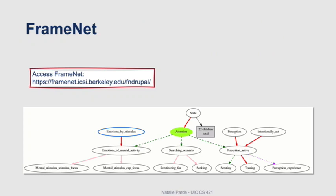As shown in the previous slide, frames can be related to one another in a variety of ways. For example, one may inherit from another, cause another, or be used by another. The slide here visualizes the relationships listed for attention, with directed arrows indicating parent-child relationships.